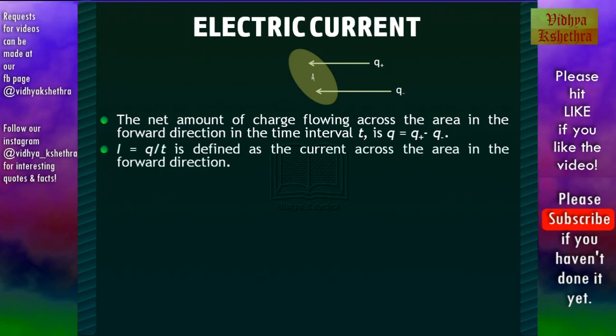I = Q/T. I is defined as the current across the area in the forward direction. So electric current is the rate of flow of charge.